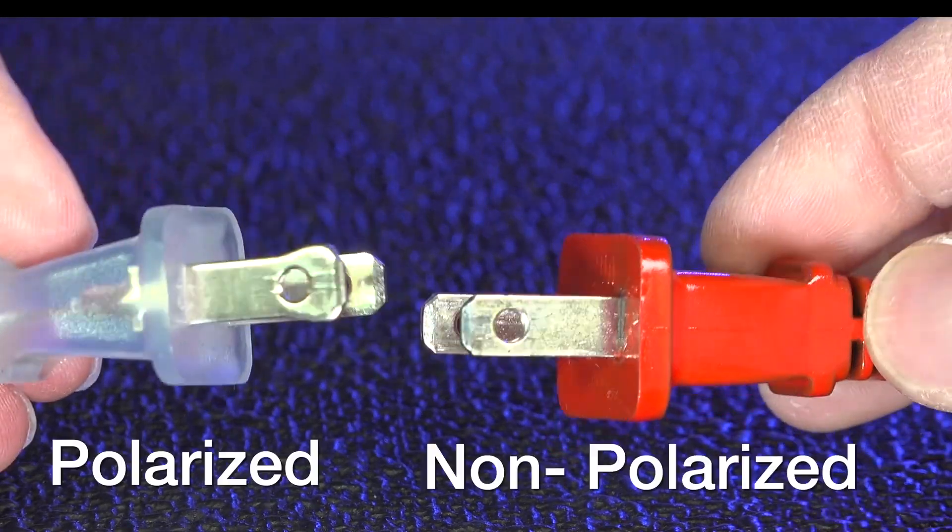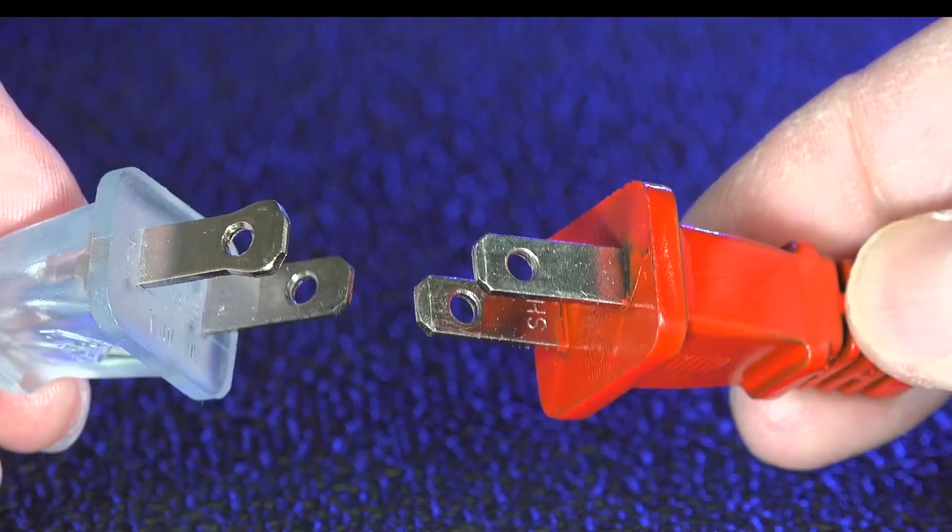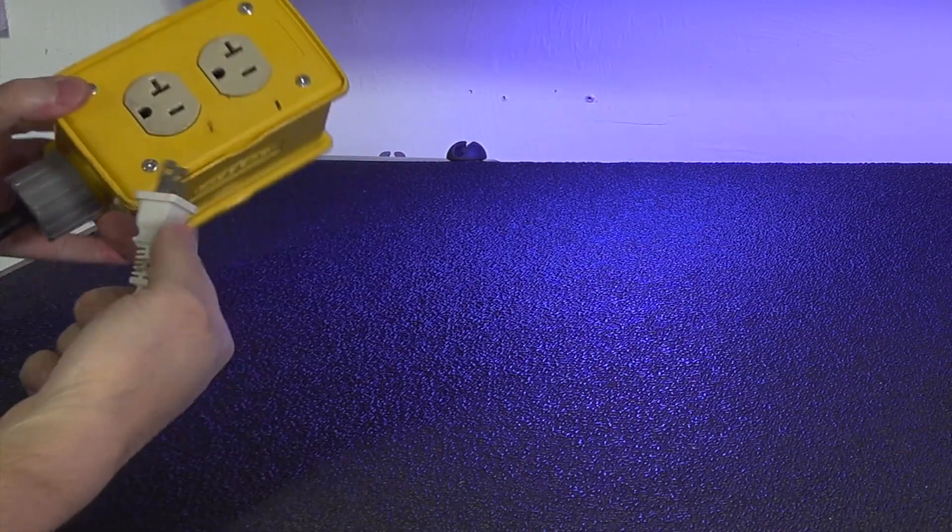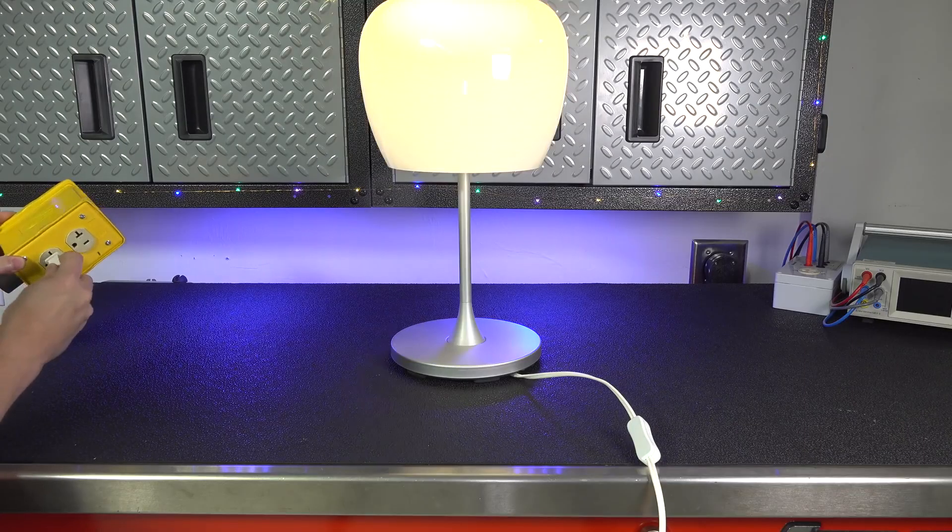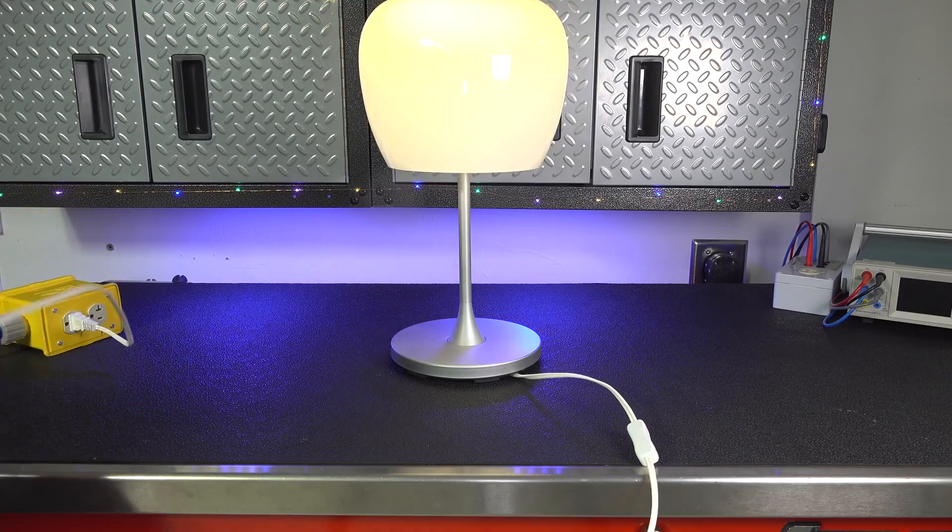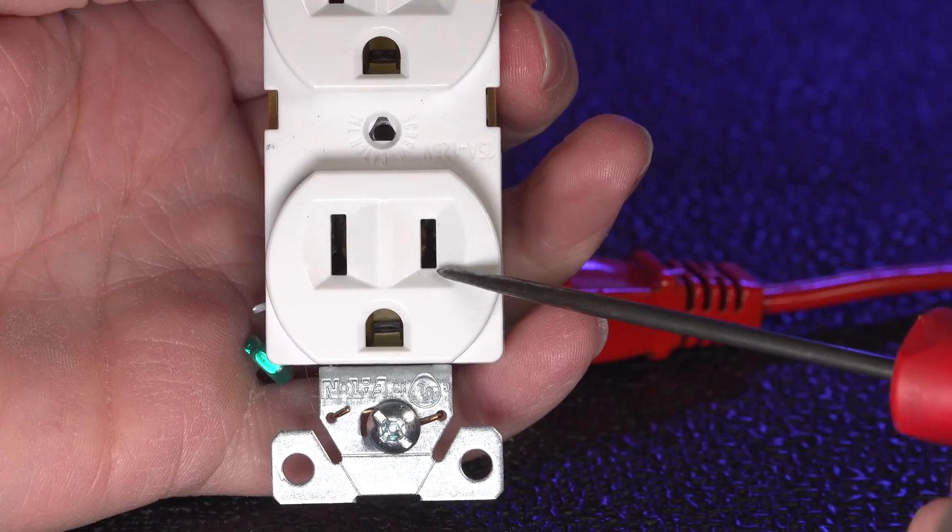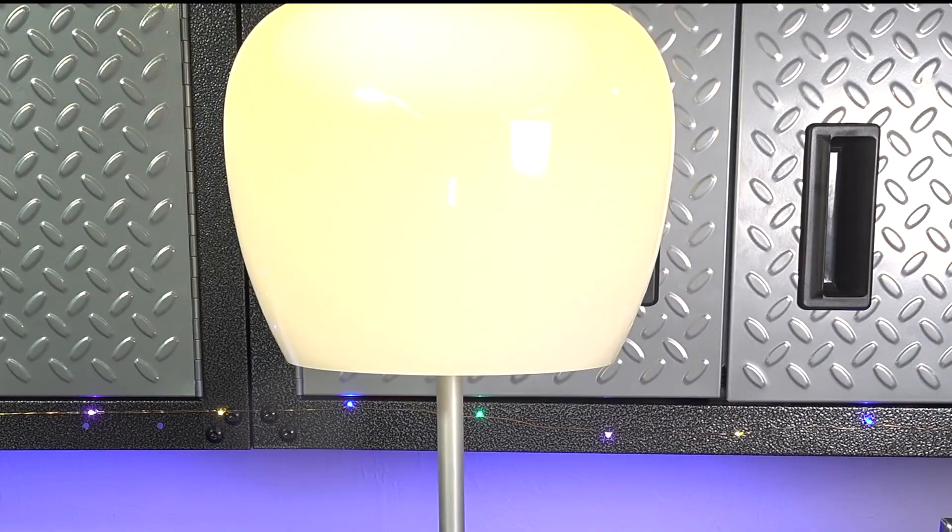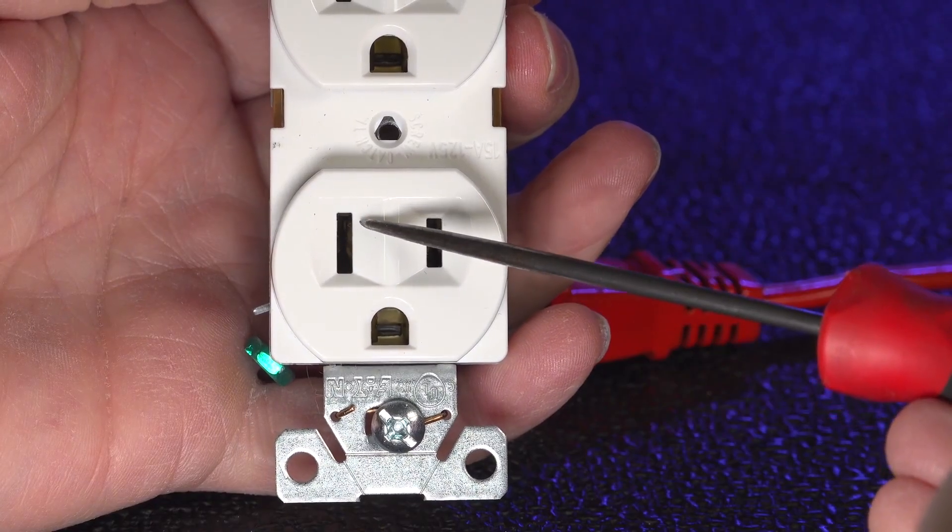Some plugs have the larger prong and other ones don't. Well it's all about how electricity flows inside your home. Electricity actually flows in and out of your outlet. Now when you plug something in, you might have just thought you were using power, but to complete a circuit, electricity comes out of the smaller prong, goes into your appliance, and then goes back into the larger prong of your outlet.